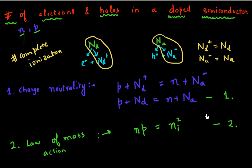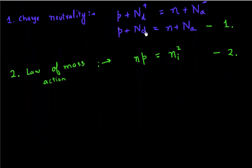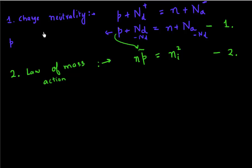Let me solve for N first. I'll replace P in the charge neutrality equation. From P plus Nd equals N plus Na, I can subtract Nd from both sides. I'm left with P equals N plus Na minus Nd.